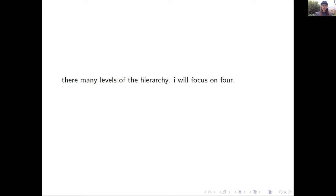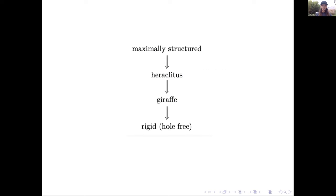There are many levels to the symmetry hierarchy. Because of time, I'll only be able to focus on four today. As we move up the hierarchy, the symmetries decrease and the structure increases. With this additional structure at each level, one is able to prove various types of things. This is analogous to the hierarchy of causal conditions — somewhere up at a certain level on the hierarchy of causal conditions, one is able to prove that the causal structure of spacetime is rich enough to determine the topology of spacetime. This is a classic result by David Malament.